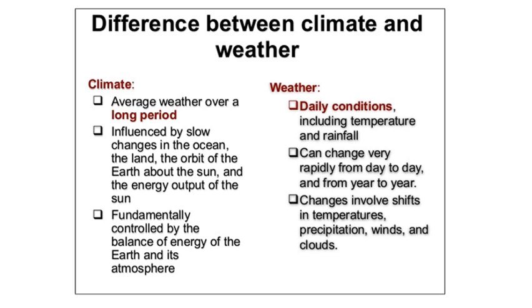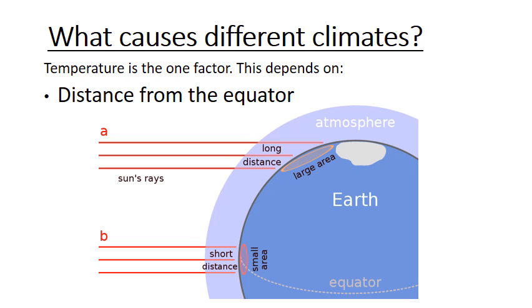These are the basic differences between weather and climate. Climate is the average weather over a long period, influenced by slow changes in the ocean, the land, the orbit of the Earth about the Sun, and the energy output of the Sun — fundamentally controlled by the energy balance of the Earth and its atmosphere. Weather refers to daily conditions including temperature and rainfall, which can change very rapidly from day to day and year to year, involving shifts in temperatures, precipitation, winds, and clouds.